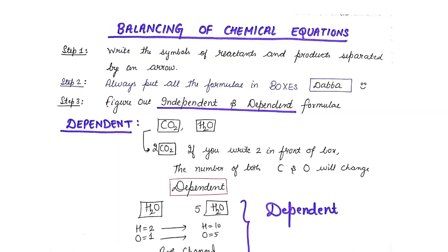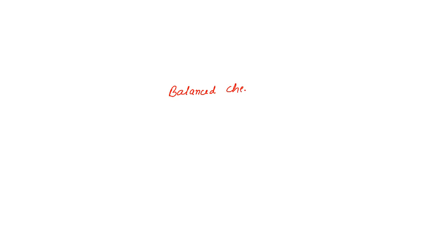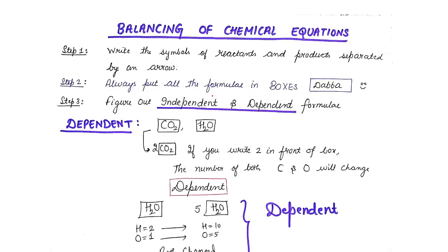Now we know the importance of a balanced chemical equation: the total number of atoms on the left-hand side should be the same as the total number of atoms of each kind on the right-hand side. This brings us to balancing of chemical equations. By this point you should understand that there is a real requirement for balancing chemical equations, so now I'll tell you the steps you need to follow.